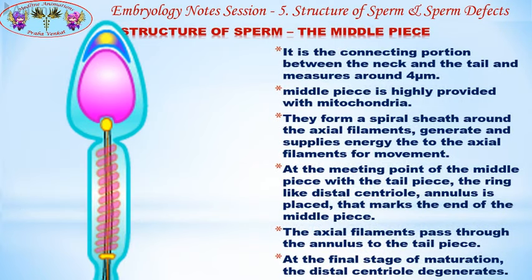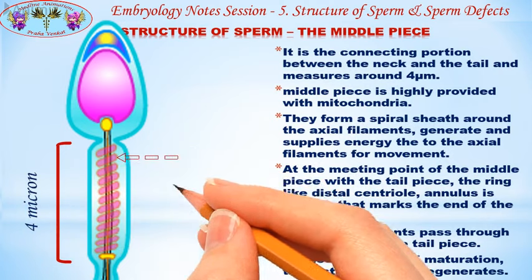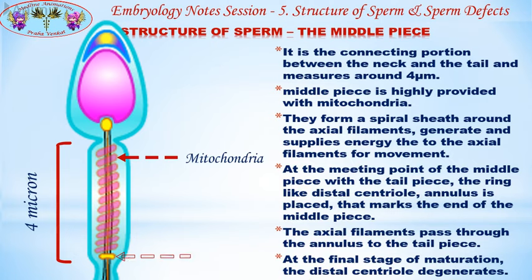The middle piece is the connecting portion between the neck and the tail, and measures around four microns. The middle piece is highly provided with mitochondria, which form a spiral sheath around the axial filaments, generating and supplying energy to the axial filaments for movement. At the meeting point of the middle piece with the tail piece, the ring-like distal centriole — the annulus — is placed, marking the end of the middle piece. The axial filaments pass through the annulus to the tail piece, and at the final stage of maturation, the distal centriole degenerates.